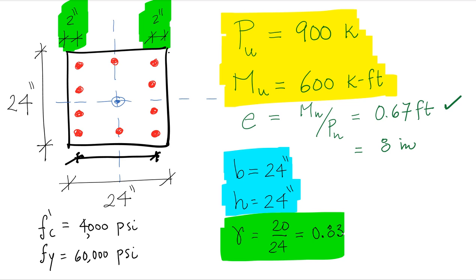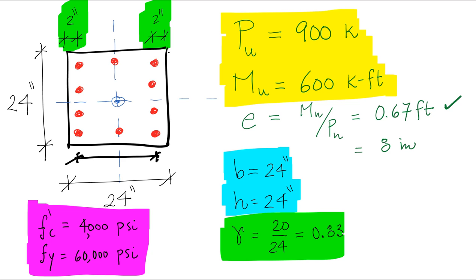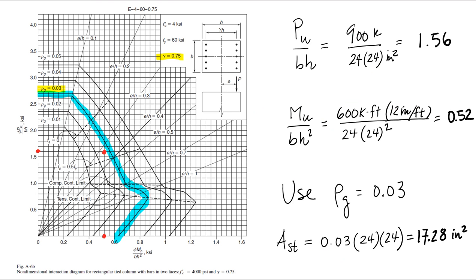In this case we're going to use 4,000 psi concrete and 60,000 psi yield stress for the reinforcement. With this information we can enter a standardized interaction diagram.